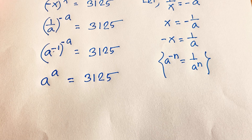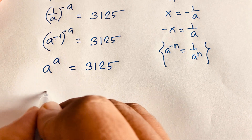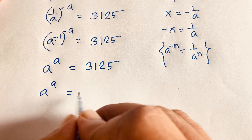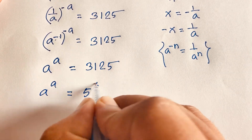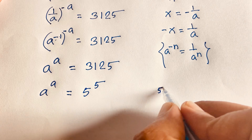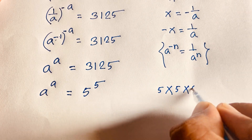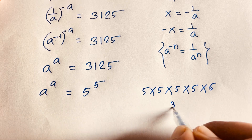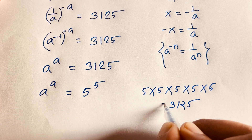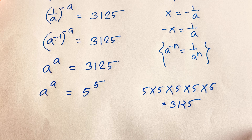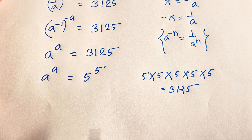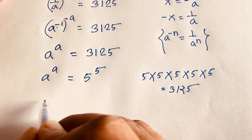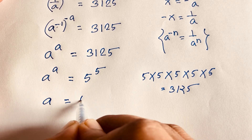We find the nice equation: a to the power a is equal to 3125. We know that 3125 equals 5 times 5 times 5 times 5 times 5, which is 5 to the power 5. So a to the power a equals 5 to the power 5, and therefore a is equal to 5.